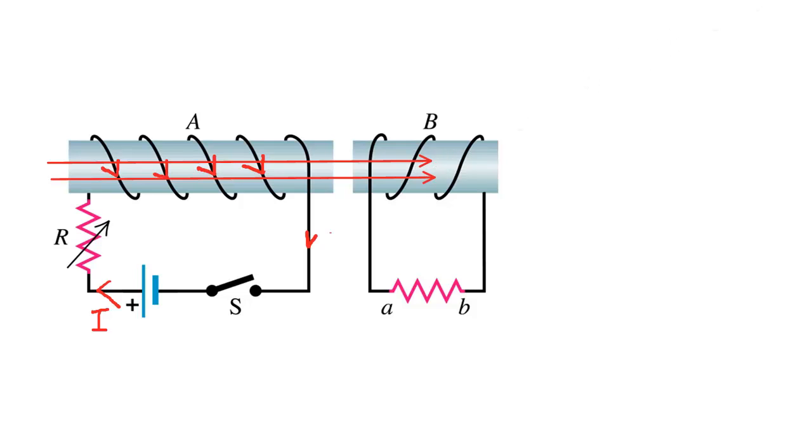Let's draw those field lines in. So the green lines represent the magnetic field that's going to be induced in solenoid B.